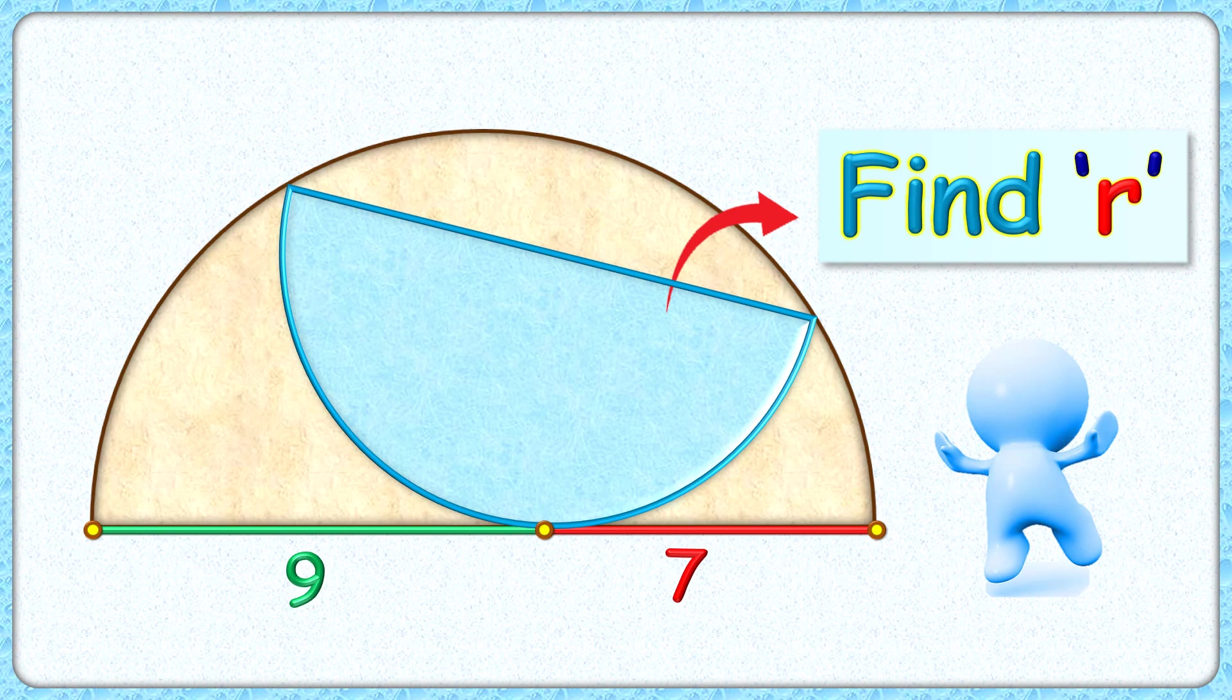It's an interesting question. Given to us is a blue semicircle inscribed in a bigger semicircle. It's touching the diameter and dividing it into lengths of 9 and 7 centimeters. The exciting part is, with this limited data, we have to find the radius of this blue semicircle.